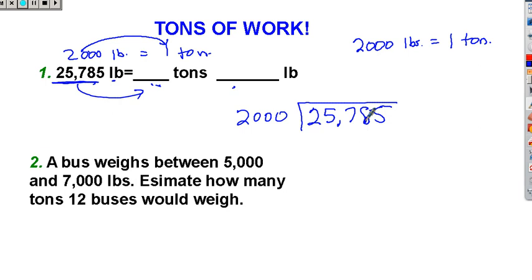Okay, now, how many times does 2,000 go into the number 2? It does not go into the number 2. This is where some kids get confused. Does the number 2,000 go into the number 25? No, it doesn't. Does the number 2,000 go into the number 257? No, it doesn't. That's still too small.